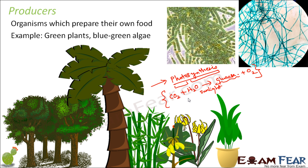Examples of producers are green plants and blue-green algae, also known as cyanobacteria. Blue-green algae also contain the pigment chlorophyll and are therefore capable of performing photosynthesis, so they are also producers.